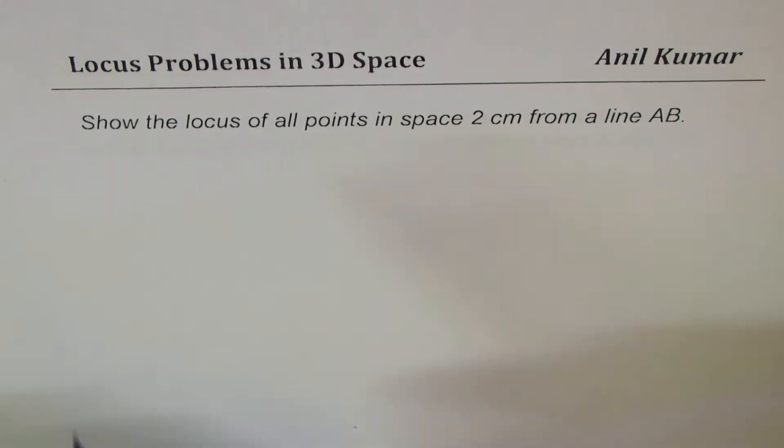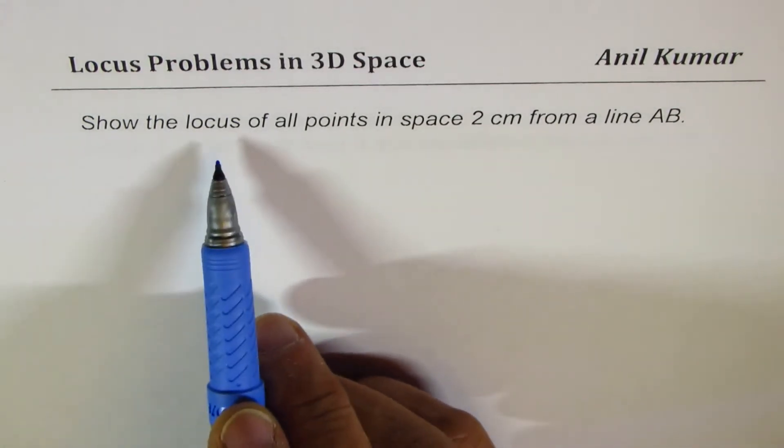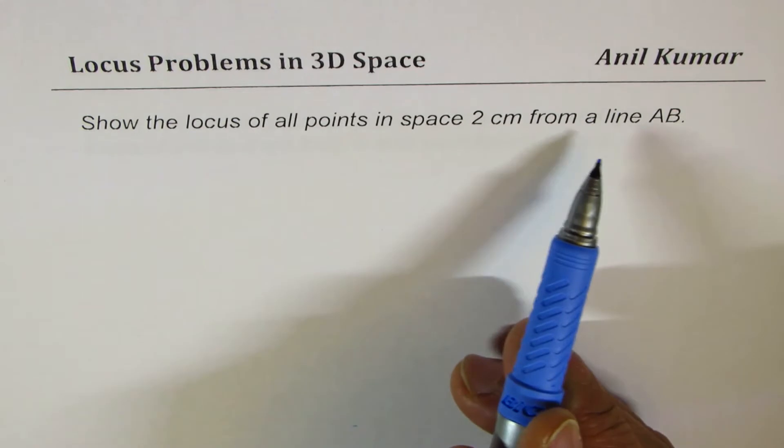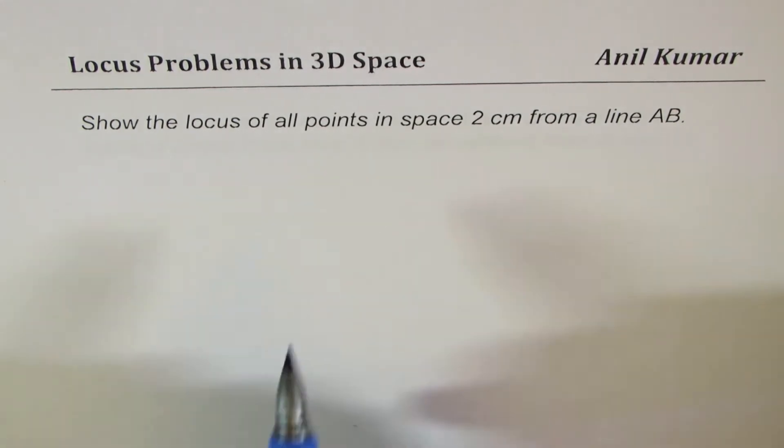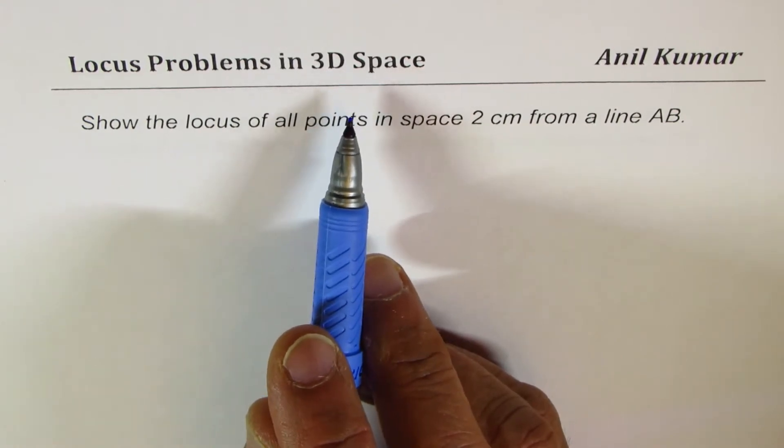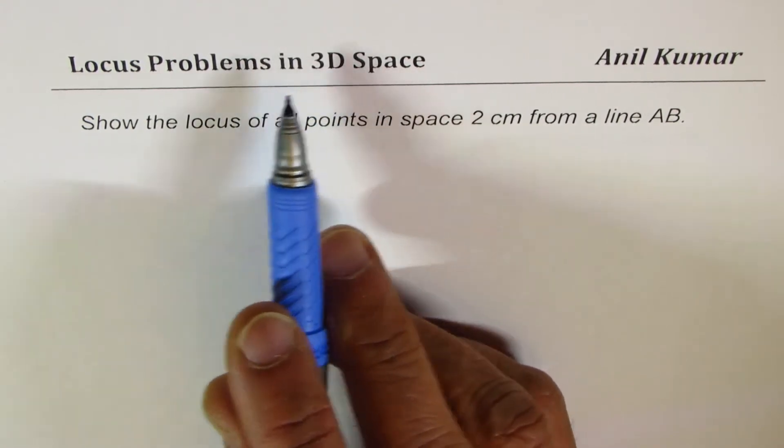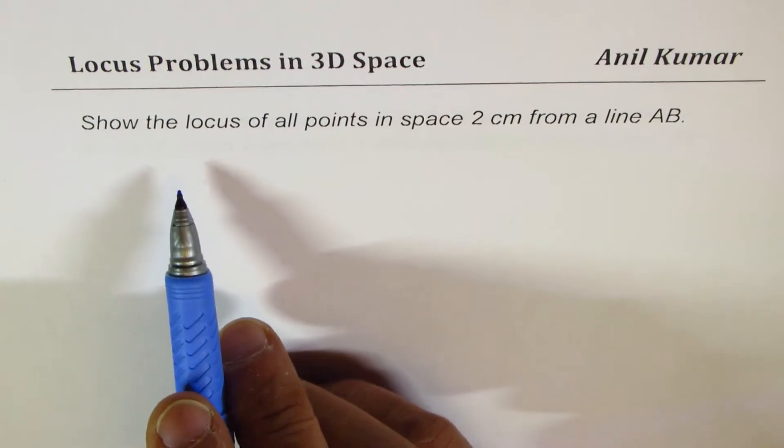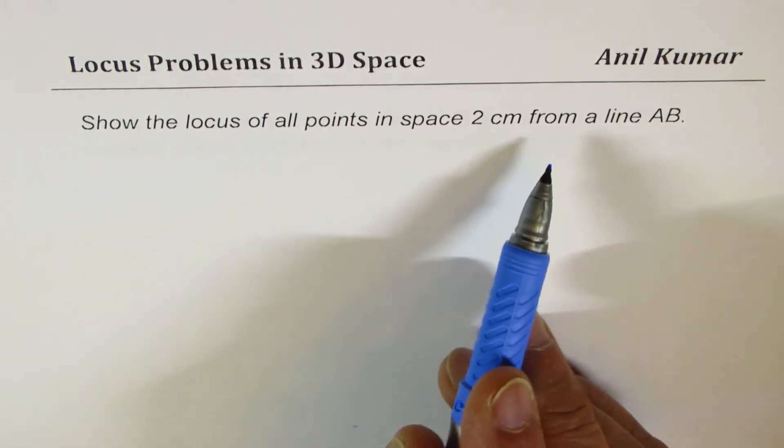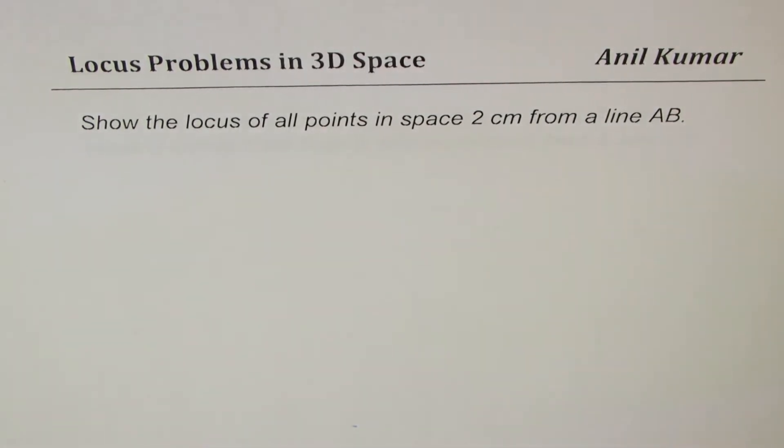The question here is, show the locus of all points in space 2 cm from a line AB. We're talking about 3D space, right? Not a plane. So, in that 3D space, what will the locus of points 2 cm away from a line represent? Think about it.